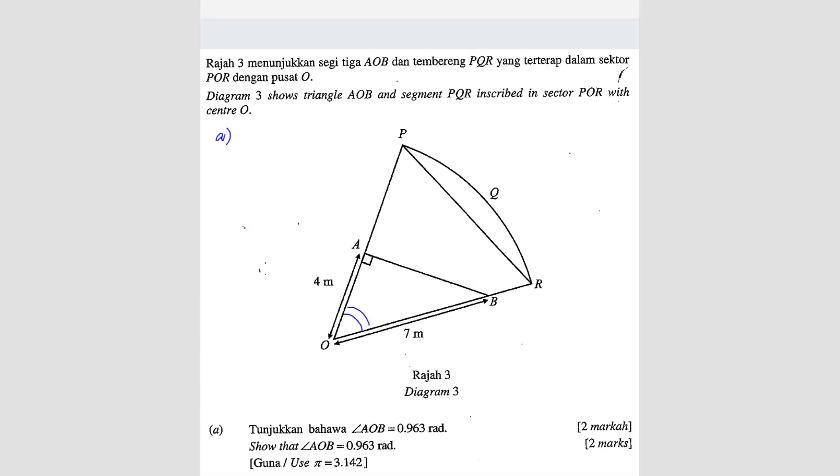So question A, angle AOB. We have adjacent and we have the hypotenuse, so we can use cos. Cos angle AOB equals 4 over 7. So angle AOB equals cos inverse 4 over 7, which is equivalent to 0.963 radian. Done.